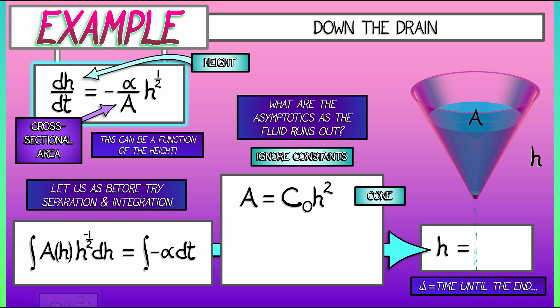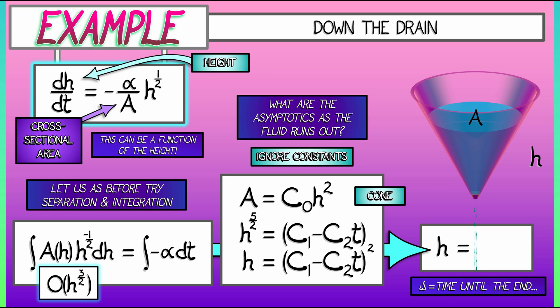Plugging in some constant times h squared for A on the left-hand side, we see that that left-hand integrand is in big O of h to the three halves. That's two minus one half. Integrate h to the three halves. What do I get? I get h to the five halves times a constant that we're going to throw in the trash on the right-hand side. That right-hand side still being c_1 minus c_2*t or omega. Solving for h means raising both sides to the two-fifths power. And in the end, what we get is that the height goes to zero as omega to the two-fifths.